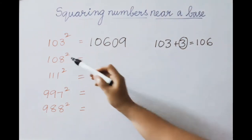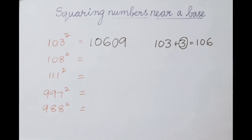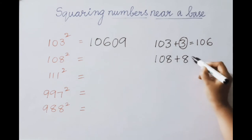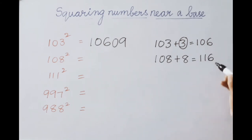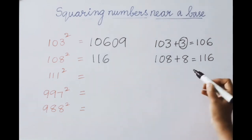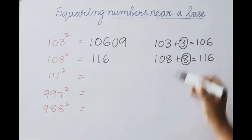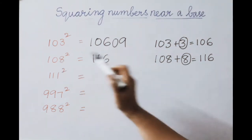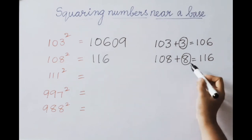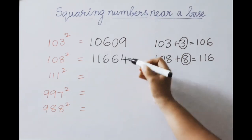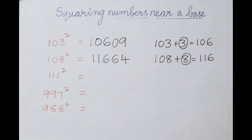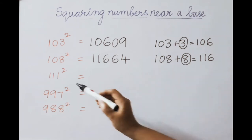Next example: 108 squared. For base 100, the excess value is 8. Add to given number: 108 plus 8 equals 116 — that is the first part answer. Square the excess value: 8 squared is 64. Base is 100 so 2 digits allowed; write 64 as is. So 108 squared equals 11664.